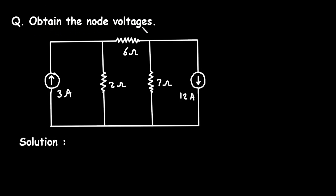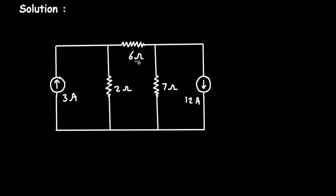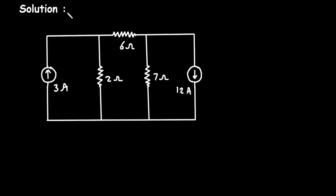Question: obtain the node voltages for the circuit. We have to find its node voltages. Let's say this is node A with voltage VA and this is node B with voltage VB, and this will be our reference node, or ground node.